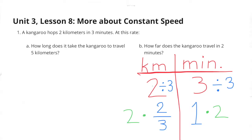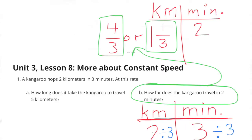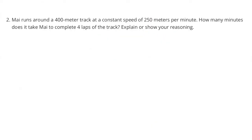For two minutes, we would just multiply the one times two to make two minutes, and the two-thirds times two gets us four-thirds kilometers, or one and one-third kilometer. So the kangaroo travels four-thirds kilometers in two minutes.